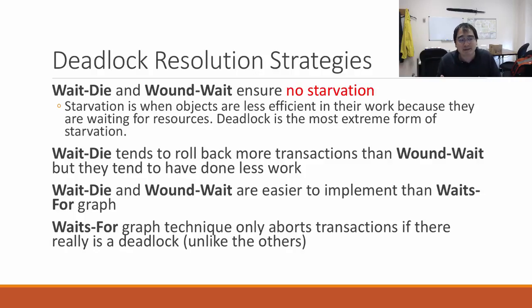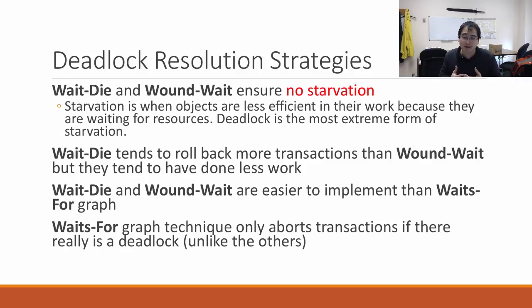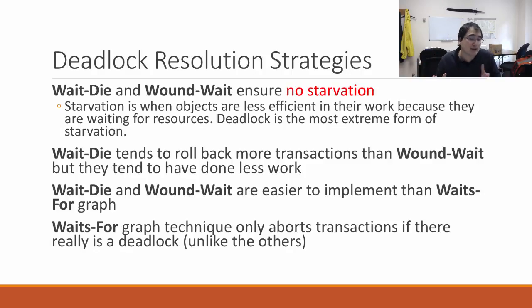With wait-die and wound-wait, things can be rolled back even if there's no deadlock, since you're only looking at pairs of transactions. The wait-for graph only rolls back when truly necessary. Which system is best? It depends — how expensive is it to calculate a wait-for graph, or how expensive is it to roll back work? Those decisions would cause you to choose one technique over the other.